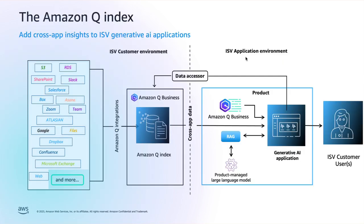Here is the high-level architecture of how the integration works. The ISV application environment has the generative AI application — let us say it's a Zoom conferencing platform. The ISV customer will have its own Q-Index running in their own AWS account. ISV customers can bring in their enterprise data into a single index store from different sources, governed and managed with high security and privacy using available connectors. The ISV platform becomes the data accessor, and the ISV customer provides permission to access their Q-Index using the retrieve API. The ISV application platform can then access customer data from Q-Index and returns relevant semantic and keyword search results to ISV customer users that they are authorized to see.